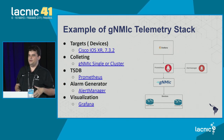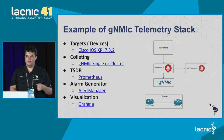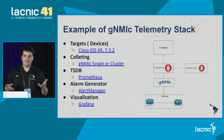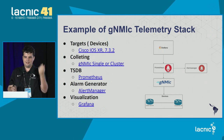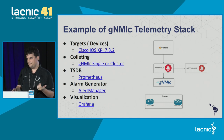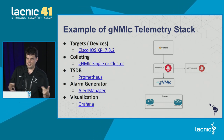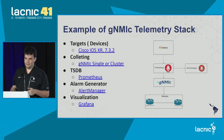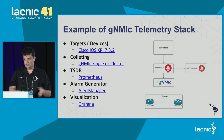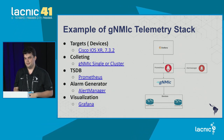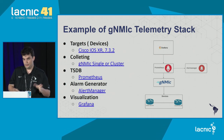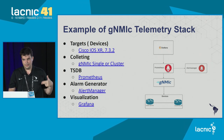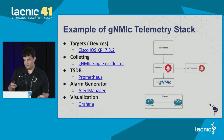What do we need to reach telemetry monitoring on our networks? We need the devices to generate information. GNMI collects this data. We need a TSDB — a time-series database — to save this information for later use. We can use an alert generator, which is optional, but in this case we'll use it because the goal is to monitor devices and create alarms. Finally, we need Grafana to display the information.